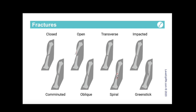A spiral fracture is a fracture that occurs from a twisting motion, and this is a definite sign of abuse. So if you see a spiral fracture, you should definitely assess for the potential of an abuse situation. And then we have a greenstick fracture. This is a partial fracture, so only one side of the bone is broken. This is most common in children, and the bone bends and cracks but doesn't fracture all the way through.